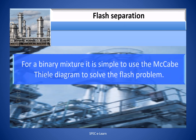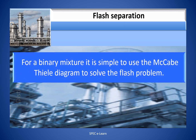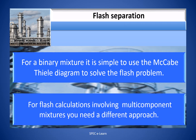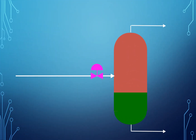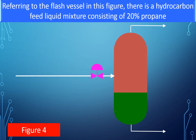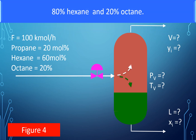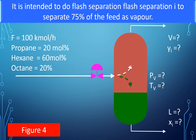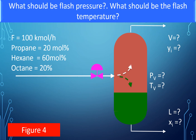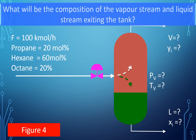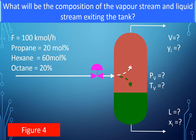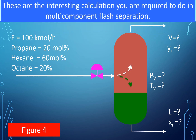For a binary mixture, it is simple to use a McCabe-Thiele diagram to solve the flash problem. For flash calculations involving multi-component mixtures, you need a different approach. Consider a hydrocarbon feed liquid mixture consisting of 20% propane, 80% hexane, and 20% octane. It is intended to do flash separation to separate 75% of the feed as vapor. What should be the flash pressure, the flash temperature, and the composition of the vapor stream and liquid stream exiting the tank? These are the interesting calculations required in multi-component flash separation.